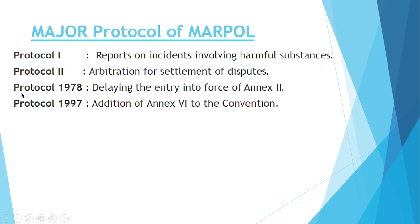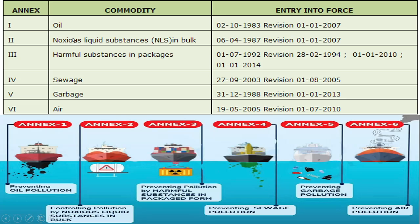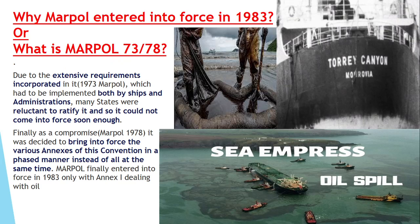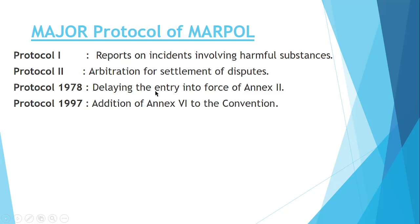The major protocols done in 1978: first, delaying the entry into force of Annex 2 — both Annex 1 and Annex 2 were supposed to come into force in 1973 which was too much, and hence many states were reluctant, so they delayed the entry into force of Annex 2 in the 1978 Protocol. In Protocol 1, they mandated that all incidents involving harmful substances should be reported. In Protocol 2, they addressed how the arbitration process would be done if there is any dispute — all of this came because after the Torrey Canyon incident there were a lot of litigation issues.